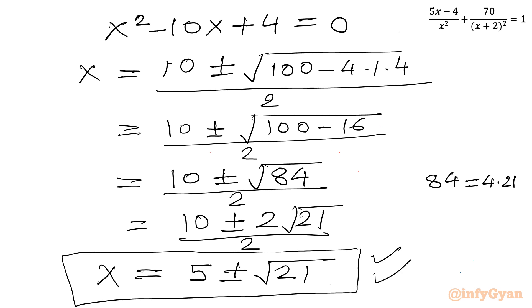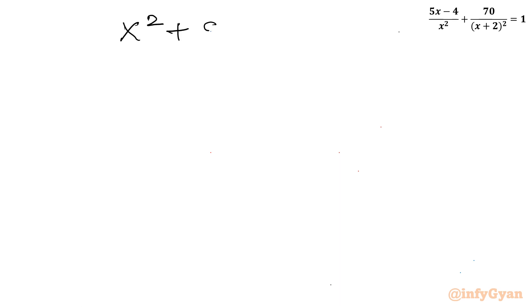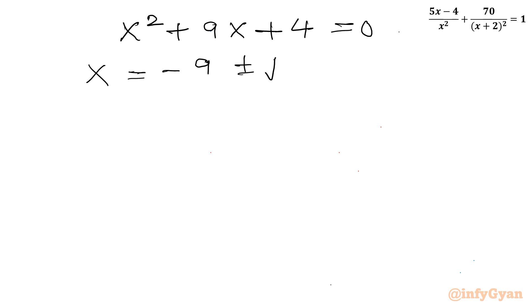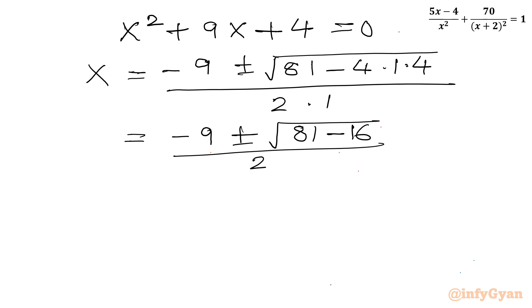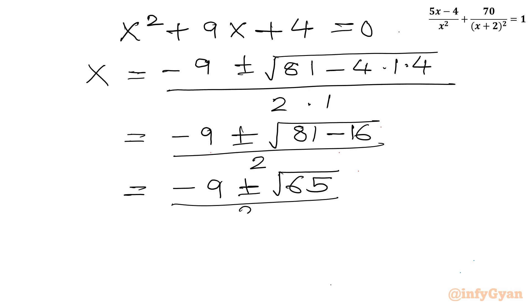Now for the second quadratic equation x² + 9x + 4 = 0, applying the quadratic formula: x = (-9 ± √(81 - 16)) / 2 = (-9 ± √65) / 2. This gives us two more real solutions: x = (-9 + √65)/2 and x = (-9 - √65)/2.